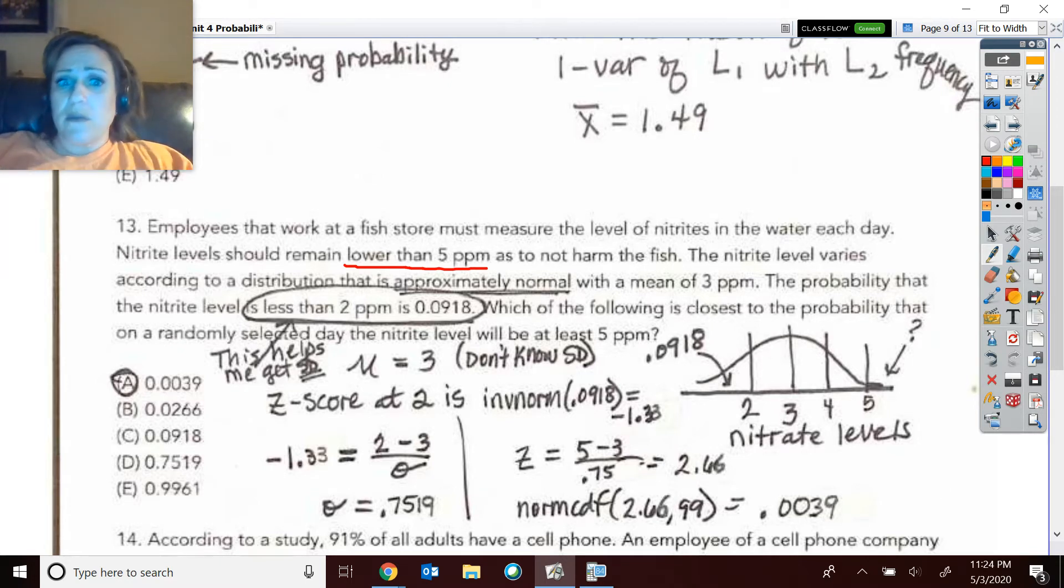Now, it varies, though. It does tell us it is approximately normal, so I'm probably going to be doing normal probabilities here. And it says that it is centered around three, so I know that that mean is at three.